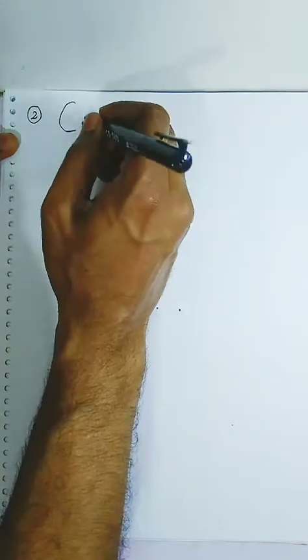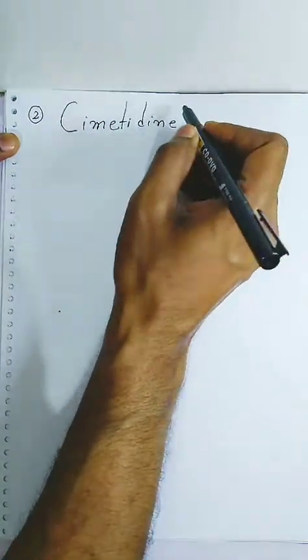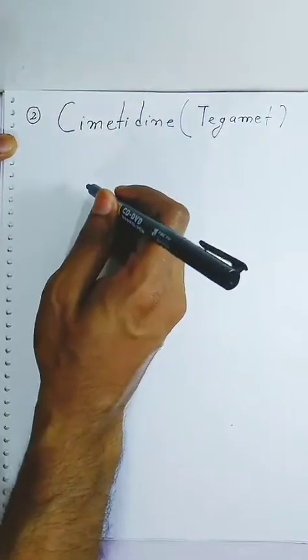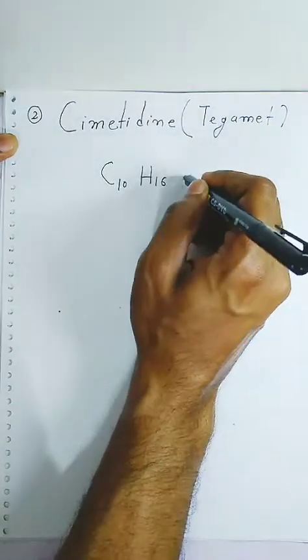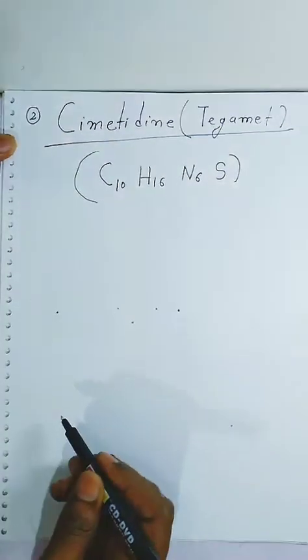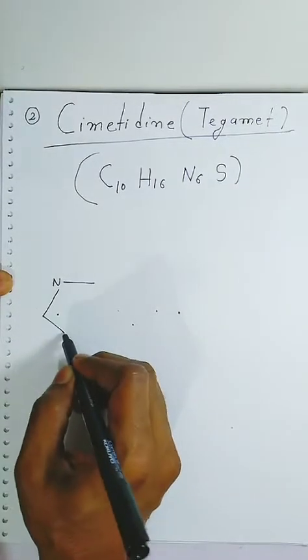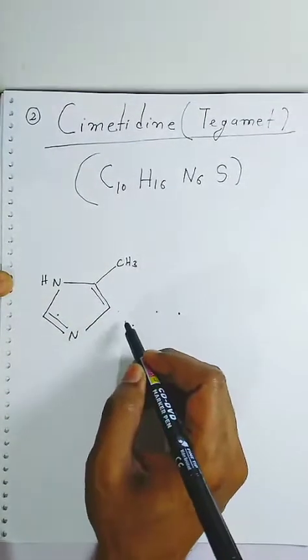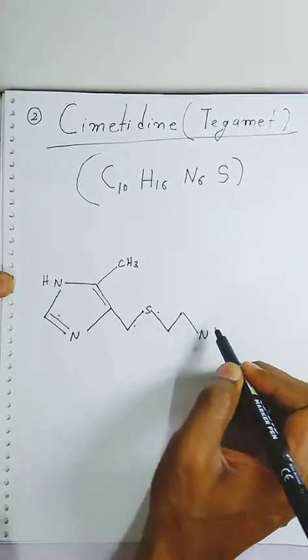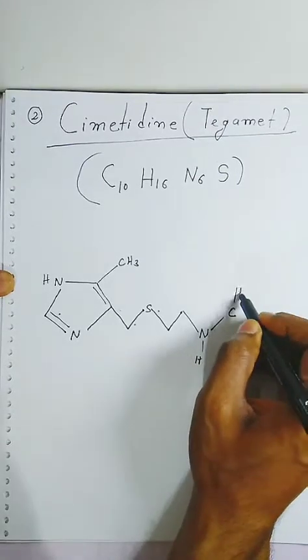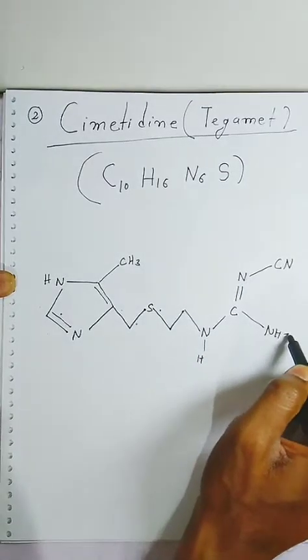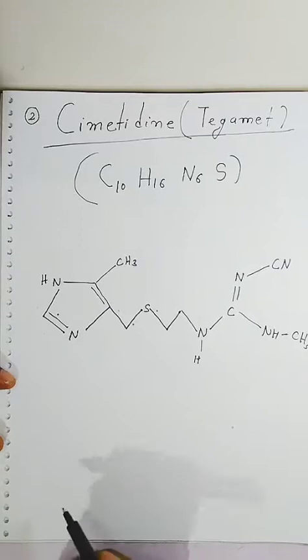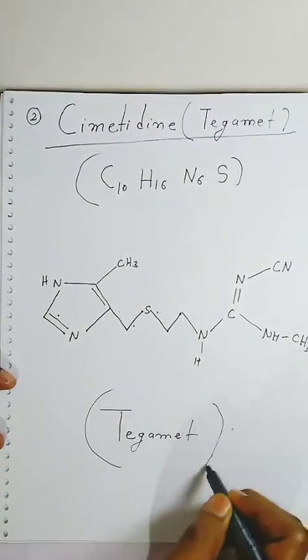Next we will see the structure of the next anti-histamine — that is cimetidine. When you see the structure, there are two nitrogens in the ring. One hydrogen will be here, and one methyl group is present. Because it contains one sulphur, you have to make one sulphur group like this. It also contains nitrogen — one more nitrogen with a cyanide group, and another amine which contains one methyl group. This is the structure of this anti-histamine.